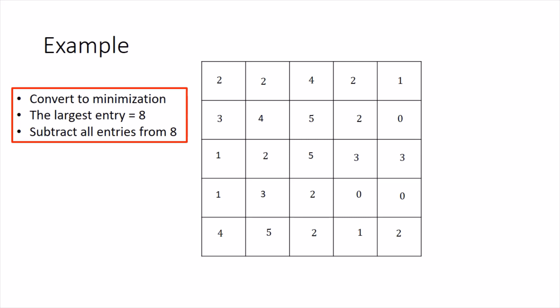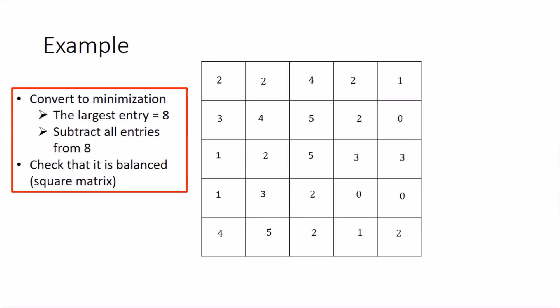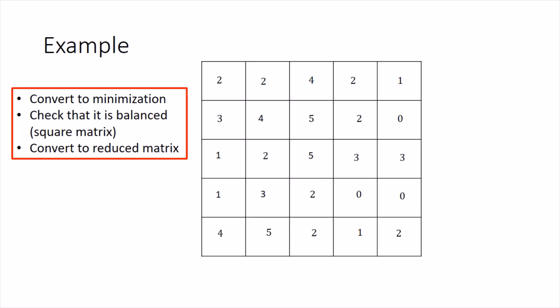Next, check whether the problem is balanced or not. It is clearly balanced because it is a 5×5 square matrix, so no balancing is needed. We can straight away apply the Hungarian method. The first step is to convert to a reduced matrix: compute the minimum of each row and subtract that minimum from all entries in the respective rows.